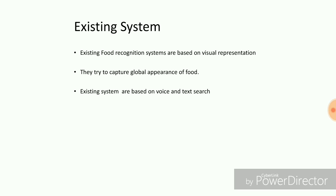Existing systems mainly try to capture the global appearance of food. These systems are also based on voice and text searches. If you tell a food name or type something into a particular app — there are many such apps — it will give you the recipe of that item. But these apps don't have the special feature to recognize a food item visually and tell you both what it is and how to cook it.